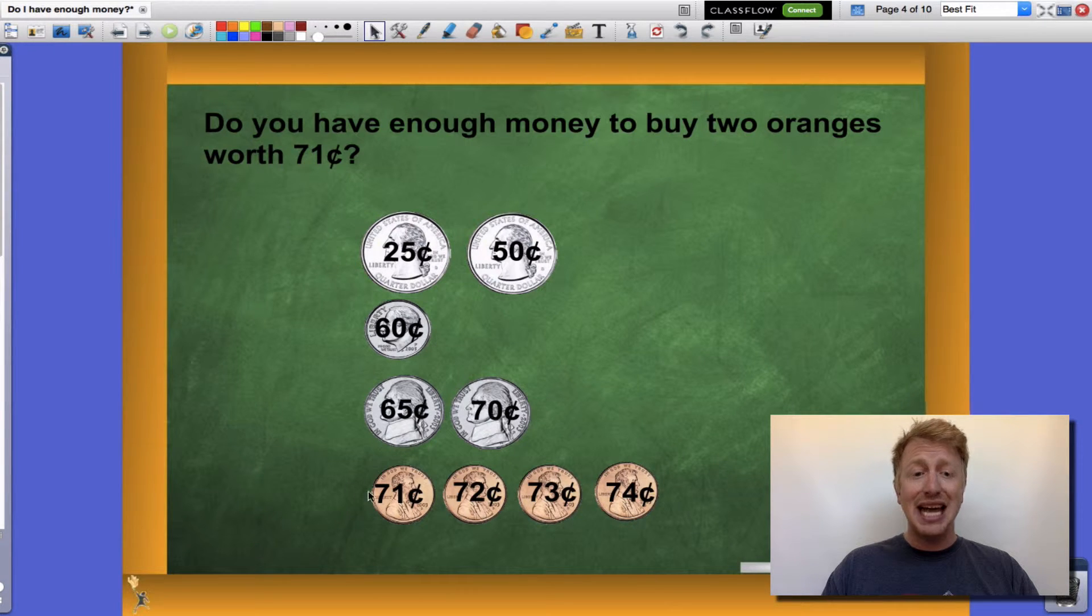Last but not least, I have four pennies each worth 1 cent. 71 cents, 72 cents, 73 cents, and 74 cents.